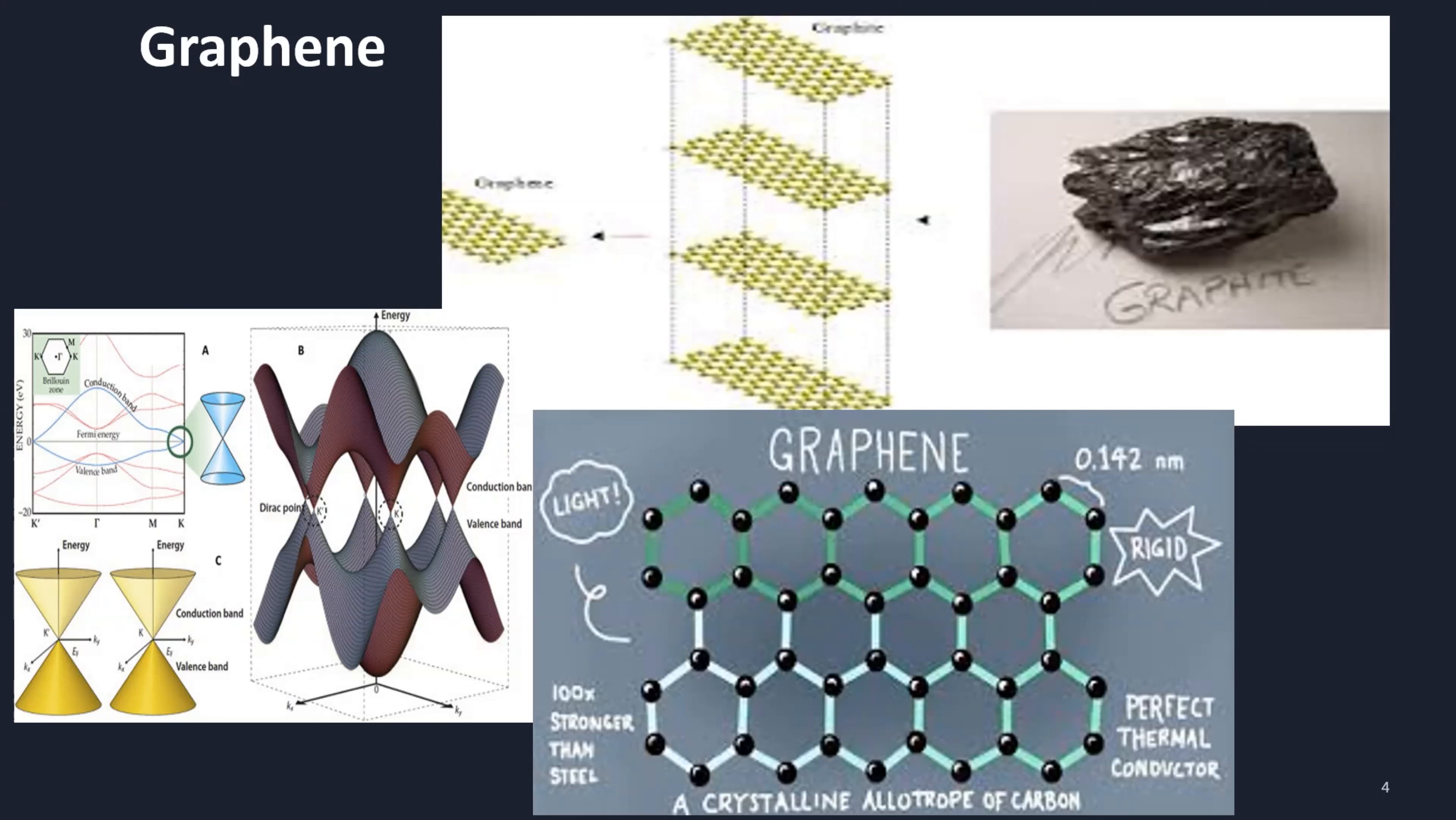Graphene presents remarkable physical properties, such as it is light, rigid, perfect thermal and electrical conductor, 100 times stronger than steel, transparent with various allotropes and various properties for each allotrope.